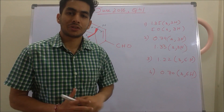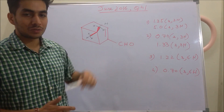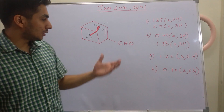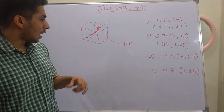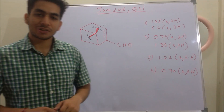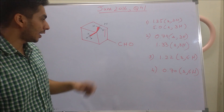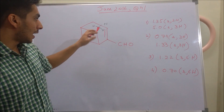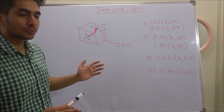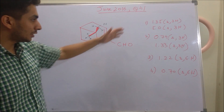This particular question was requested by one of the viewers and came in June 2016, question number 41 for two marks. In this question we are given a compound and they are asking the chemical shift values of these two methyl groups represented by the bold bond — specifically the chemical shift values of the methyl protons.